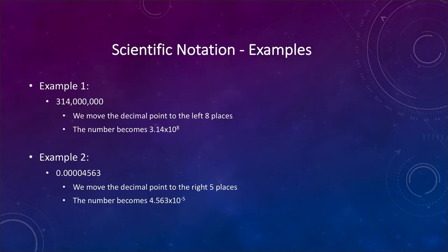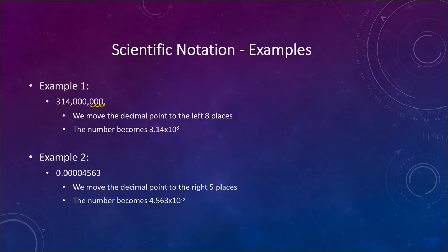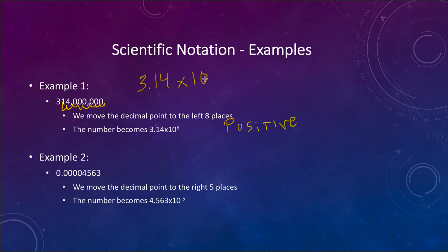Let's look at a couple of examples. First, we have the number 3.314 million. We can write that in scientific notation by placing the decimal point at the very end and moving it 8 places to the left until we're left with 3.14. Since we moved it to the left, the exponent is positive — so 3.14 times 10 to the 8th power. We can write 314 million as 3.14 times 10 to the 8th power.